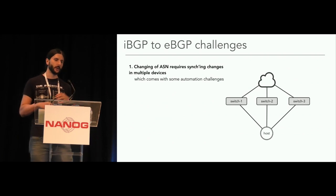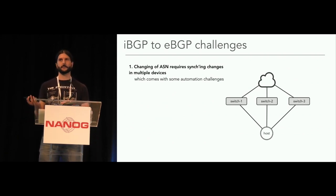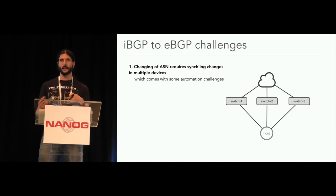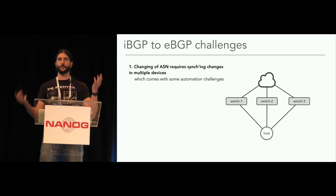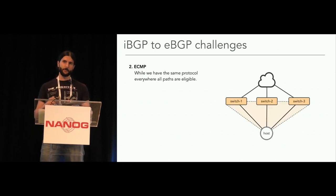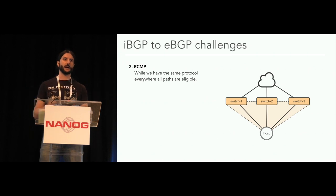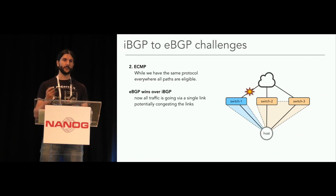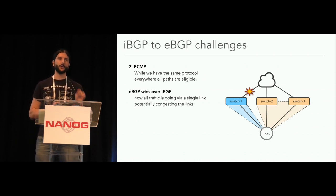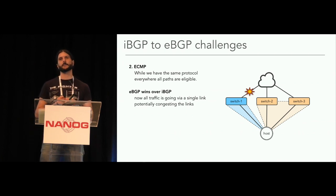But why is migrating from iBGP to eBGP an issue? It has a couple of problems. First, if you're changing ASes in your network, you have to synchronize them — if you don't make changes simultaneously on all involved devices, you bring down your network, because local and remote ASes must be in sync on both sides or the session won't come up. Also, iBGP and eBGP prefixes are not compatible for ECMP routing. As soon as you migrate one device to eBGP, that device starts attracting all the traffic because eBGP wins over iBGP, potentially causing congestion upstream and disrupting service.